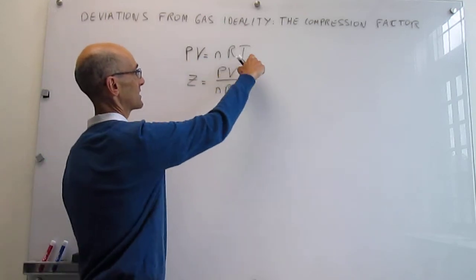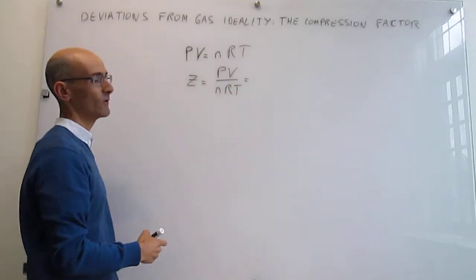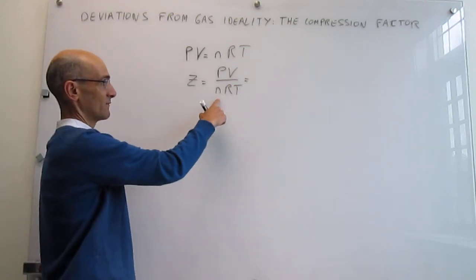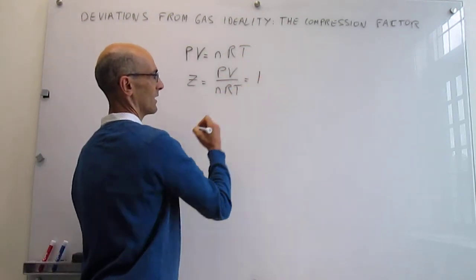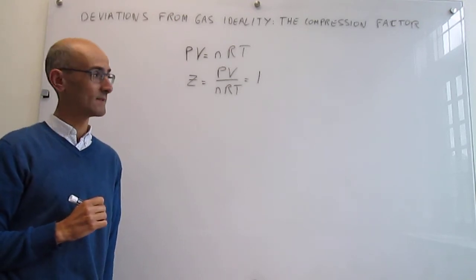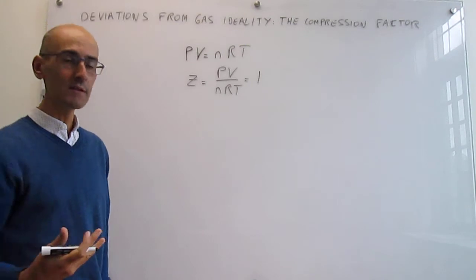Divide both sides of the equation by nRT and you will have the compression factor, and on the right hand side you will have 1. So that is the expectation for an ideal gas. But this is something you can actually measure.